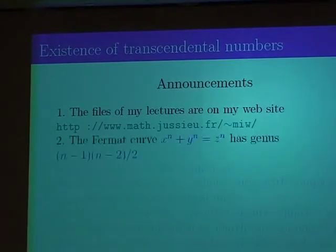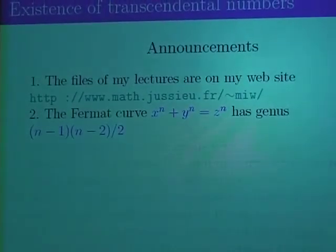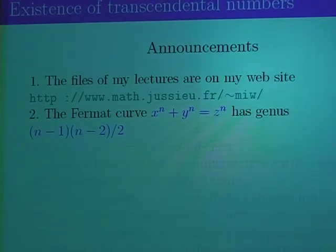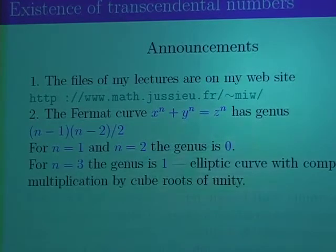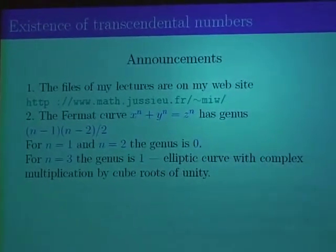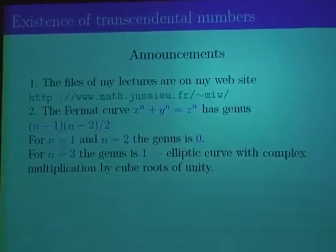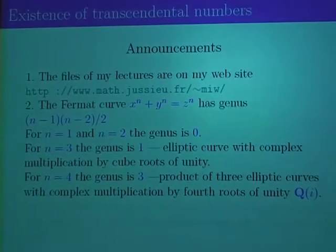I have another announcement. I made a mistake yesterday, which was pointed out to me, by mentioning the genus of the Fermat curve. The result is that the genus is (n-1)(n-2)/2. For n equal to 1 and 2, the genus is 0. For n equal to 3, it's an elliptic curve with complex multiplication by the cube root of unity. And for n equal to 4, the genus is 3.